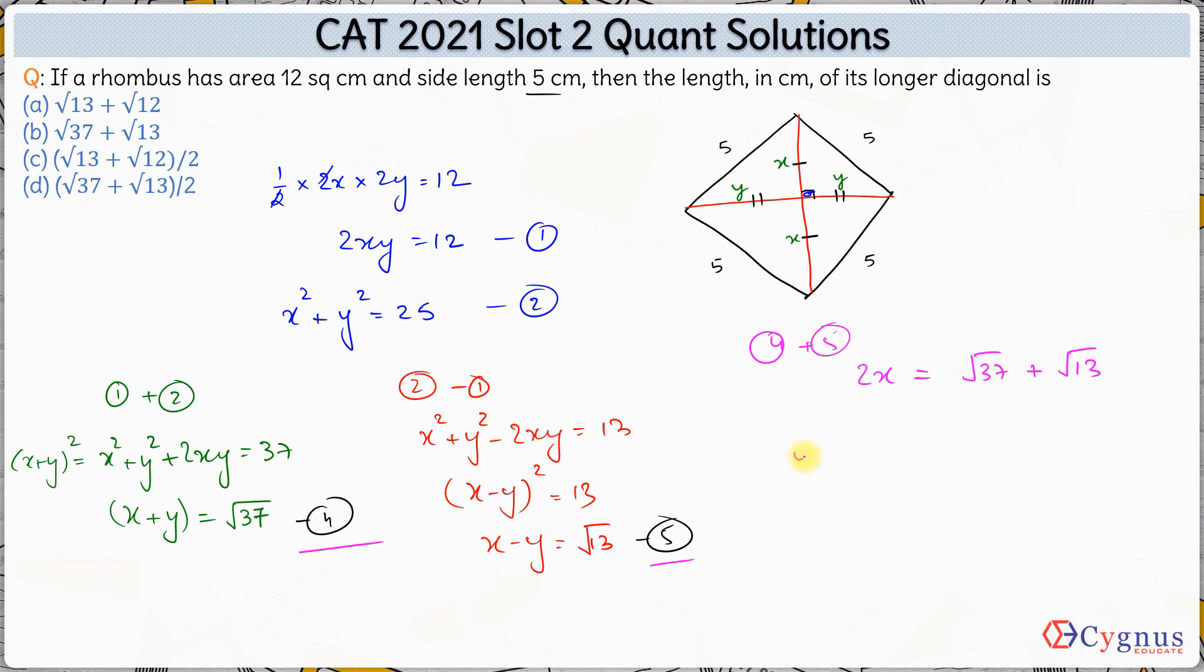If you subtract 4 and 5, if you subtract fifth from the fourth equation, we have twice of y is root of 37 minus root of 13 if you subtract. Now obviously you can see out of these two, 2x is the first diagonal. 2x is one of the diagonals, x plus x this is one diagonal and this is the other diagonal 2y. Now out of these obviously 2x is the bigger diagonal because there is a plus sign over here whereas there is a minus sign over here.